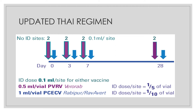The updated Thai regimen is the intradermal regimen using two-site intradermal injection given on Day 0, Day 3, Day 7, and Day 28 — written as 2-2-2-0-2. It has four doses total, with no Day 14 dose. The intramuscular schedule (Essen regimen) includes Day 14 — five doses total, written as 1-1-1-1-1 with single-site administration and the full vaccine dose each time.